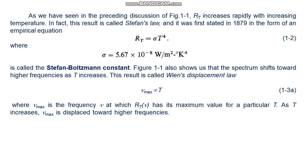Figure 1.1 also shows us that the spectrum shifts towards higher frequencies as temperature increases. This result is called Wien's displacement law: ν_max is proportional to temperature, where ν_max is the frequency ν at which R_T(ν) has its maximum value for the particular T. As T increases, ν_max is displaced toward higher frequencies. All these results are in agreement with the familiar experiences discussed earlier, namely that the amount of thermal radiation emitted increases rapidly—the poker radiates much more heat energy at higher temperatures—and the principal frequency of the radiation becomes higher. The poker changes color from dull red to blue-white with increasing temperature.